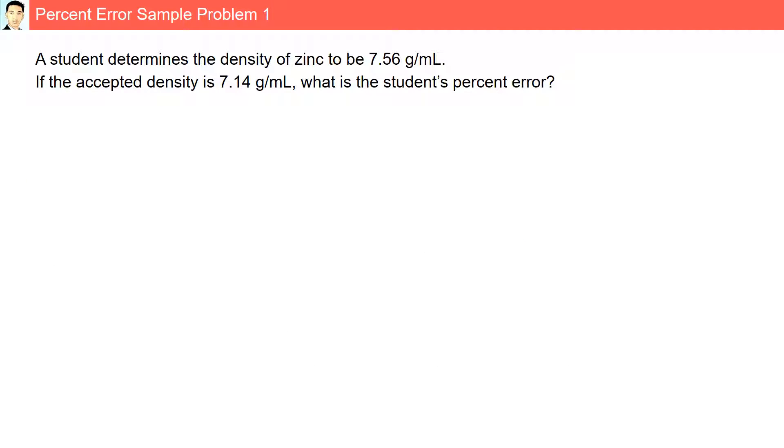Percent error sample problem 1. A student determines the density of zinc to be 7.56 grams per mL. If the accepted density is 7.14 grams per mL, what is the student's percent error?